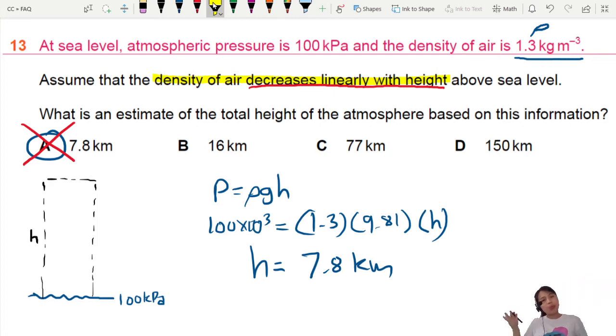Wait a second. When we use this rho here, this is incorrect. Because if we use 1.3, that means throughout the whole air column, your density is 1.3 kg per meter cubed throughout the whole thing. But that's not correct, because they just told us density decreases linearly with height. So we need to change this calculation a little bit because our assumption is not correct.